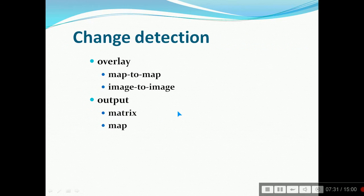Change detection means overlaying map-to-map and image-to-image. It shows the changes which have occurred in two different temporal images, and output is matrix or a map.